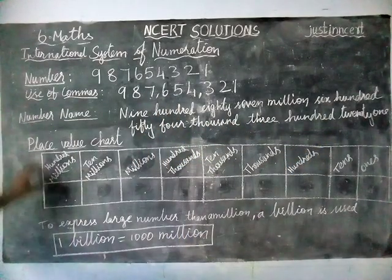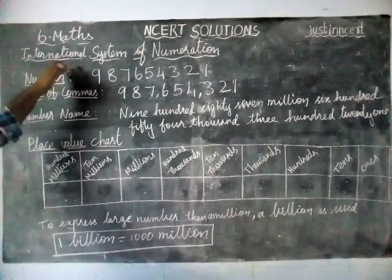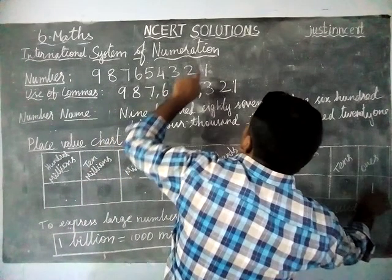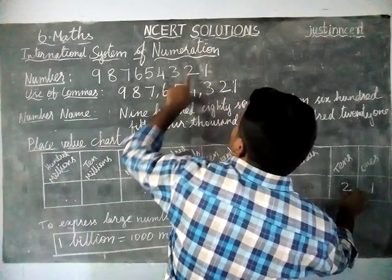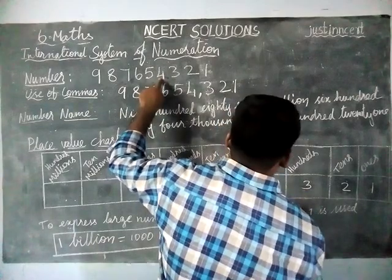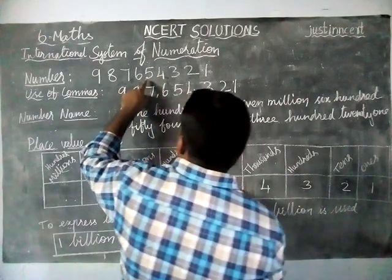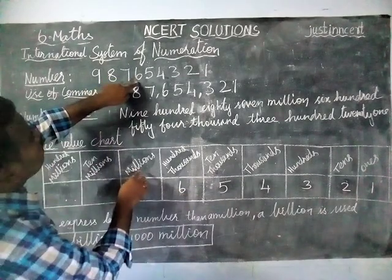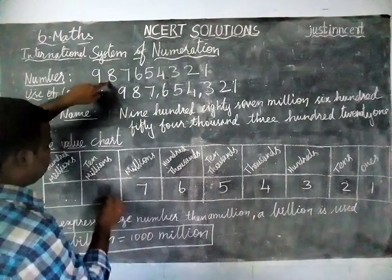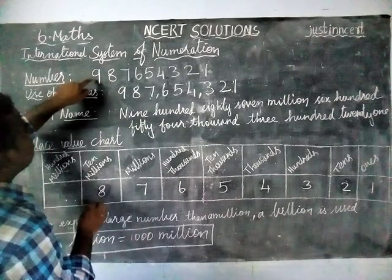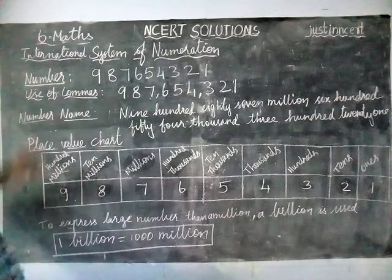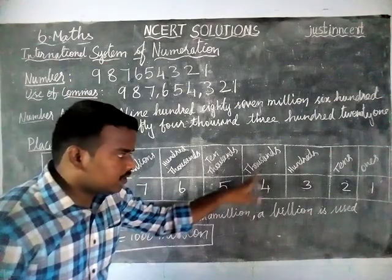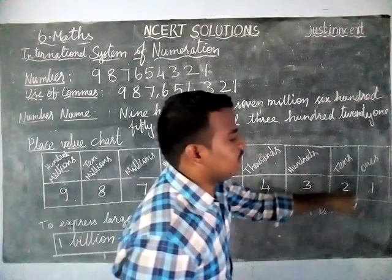Next, how to write it in the place value chart — the place value chart of the International System of Numeration. The same number: ones place is 1, tens place is 2, hundreds place is 3, thousands place is 4, ten thousands place is 5, hundred thousands place is 6, millions place is 7, ten millions place is 8, hundred millions place is 9. So we read it as nine hundred eighty-seven million, six hundred fifty-four thousand, three hundred twenty-one.